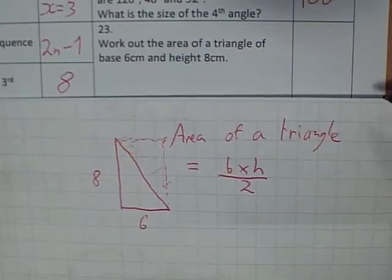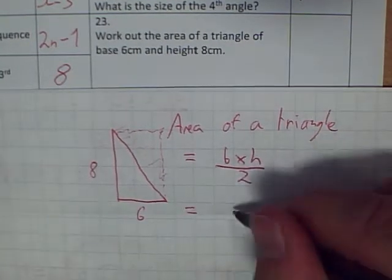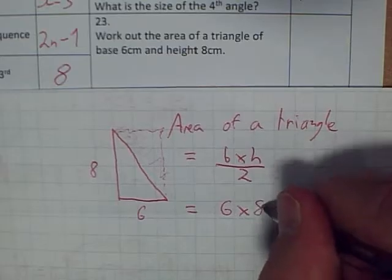So that's why the area of a triangle is base times height divided by 2. So in this case, it's 6 times by 8 divided by 2.